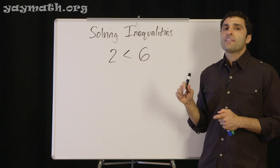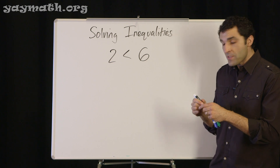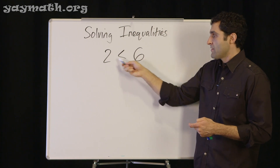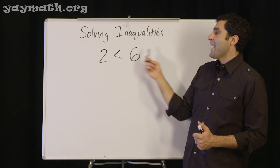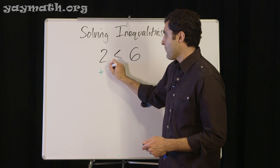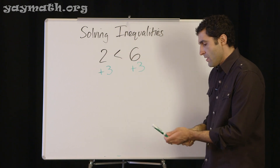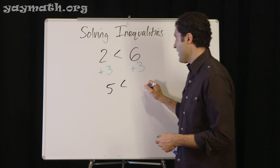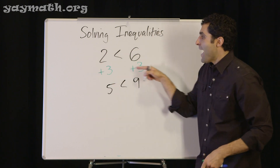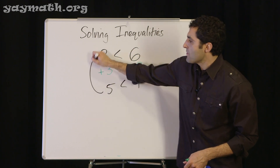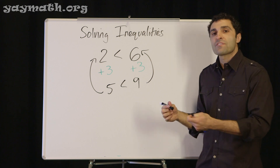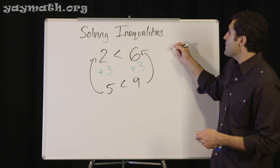Let's start with one inequality: is two less than six? Hopefully you know that it's true. Based on our balance scale, clearly this isn't balanced but it's a true statement. If I were to add stuff to both sides, would that continue to be true? Let's say I add three on each side — the result is five less than nine, still true. So if you have an inequality and you add or subtract stuff to both sides, it's still true.